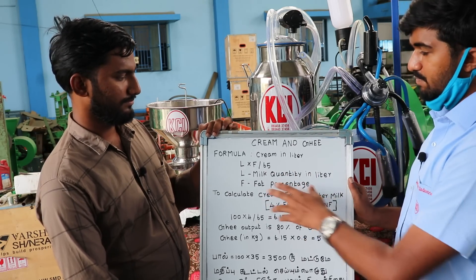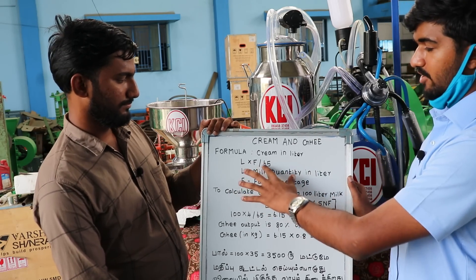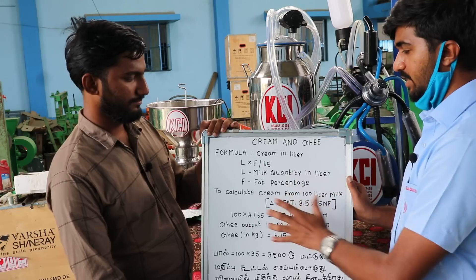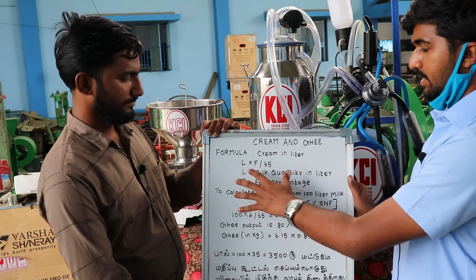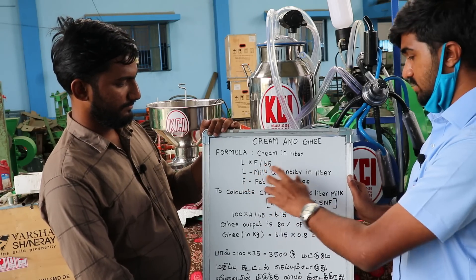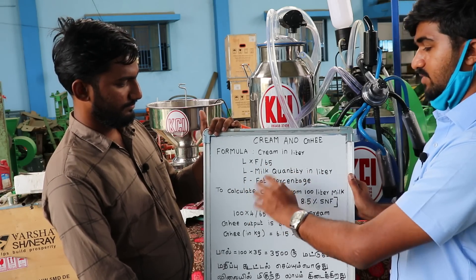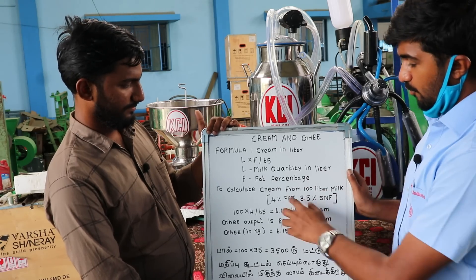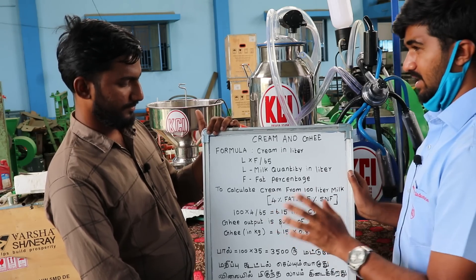We use a simple formula: L into F divided by 65 — that is the defined formula. L is the fat percentage. I consider approximately 4% fat.